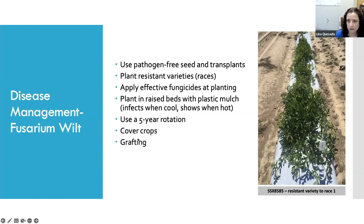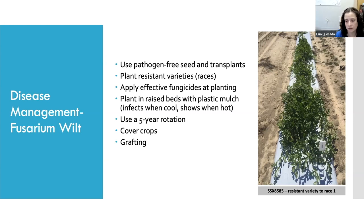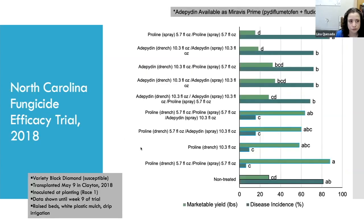Some cover crops have shown suppressive activity, and grafting is a really good method. We have some good rootstocks available commercially now — a grower here in the mountains in North Carolina actually sells grafted transplants — so if you have a bad field that's definitely something to consider.